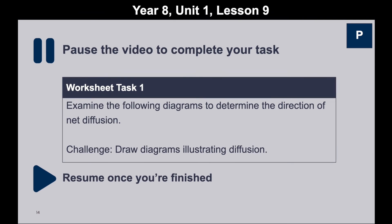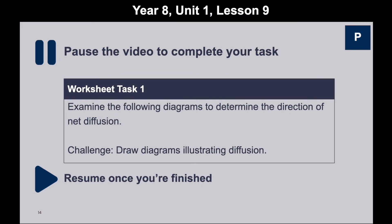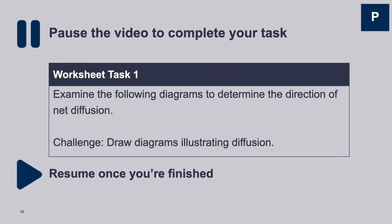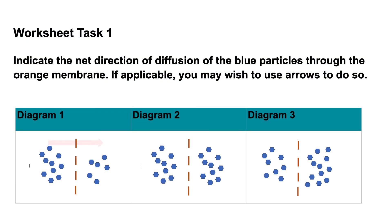For example, if I had a question asking students to indicate the net direction of diffusion across a membrane on a diagram, I would be looking for the presence or absence of an arrow depending on whether a concentration gradient exists, and the arrow pointing in the right direction to show an understanding of diffusion occurring from a high to low concentration.